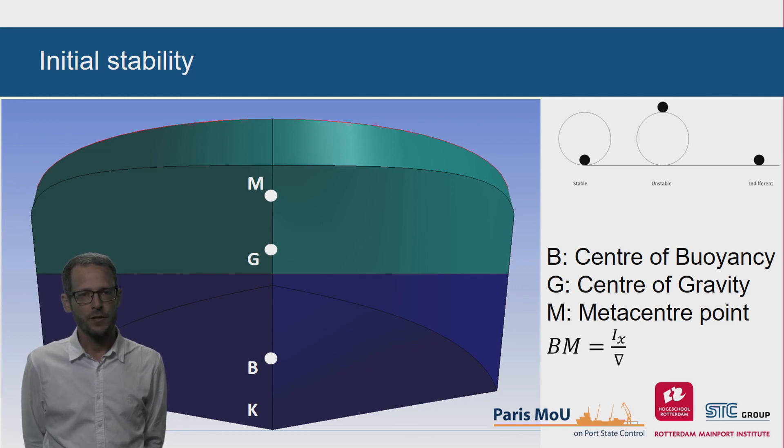When GM is negative, G lies above M, the ship is unstable. As long as the ship is exactly upright, the ship remains upright. But as soon as a small healing moment is applied, the weight of the ship and the healing moment will work in the same direction and the ship will capsize.